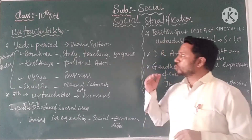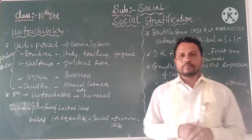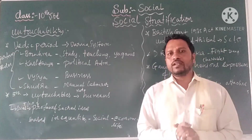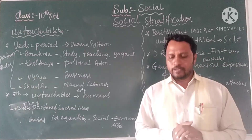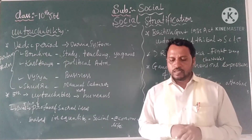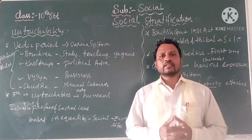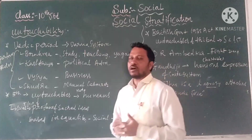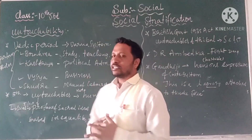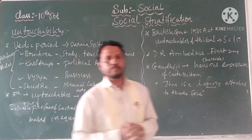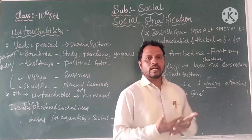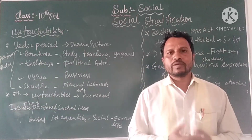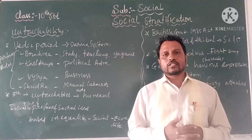Untouchability is the social evil. The remaining class — what kind of problems untouchability people were facing and what kind of solutions the government has given — we will discuss in the next class.